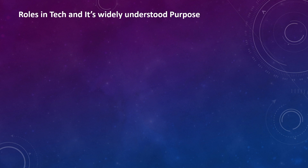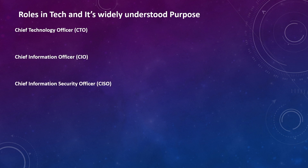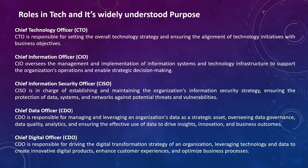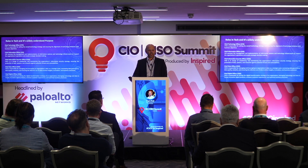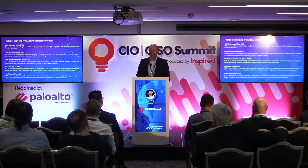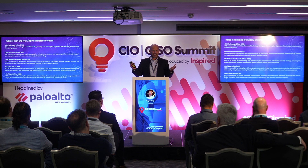Roles in tech are widely understood. Depending on the organization and number of people, there are mainly five roles: Chief Technology Officer, Chief Information Officer — I'm talking about the functions under these people. Some big companies also have a Chief Data Officer, and others now have Chief Digital Officers who want to do new things with digital technology. Technology officers set the strategy; the Chief Information Officer does the implementation of information systems, technology infrastructure, and supports the organization's operations and enables strategic decision making.